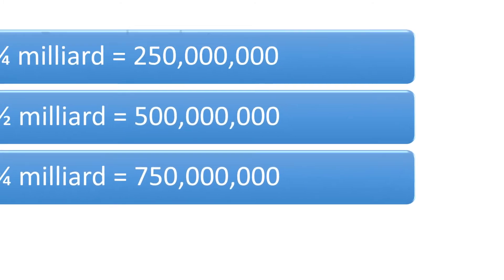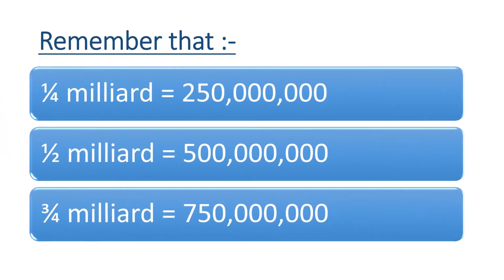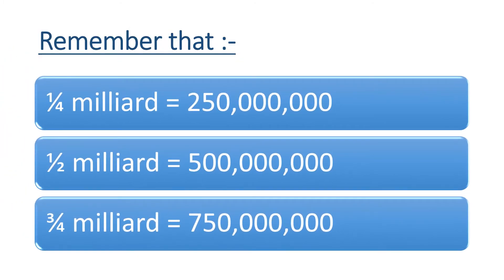Remember that a quarter milliard equals 250 million, half a milliard is 500 million, and three quarters of a milliard equals 750 million.